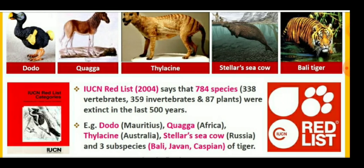Regarding the loss of biodiversity, we can refer to the IUCN Red List. IUCN means the International Union for Conservation of Nature. The Red List data from 2004 shows that 784 species were extinct in the last 500 years, including 338 vertebrates, 359 invertebrates, and 87 plant species.